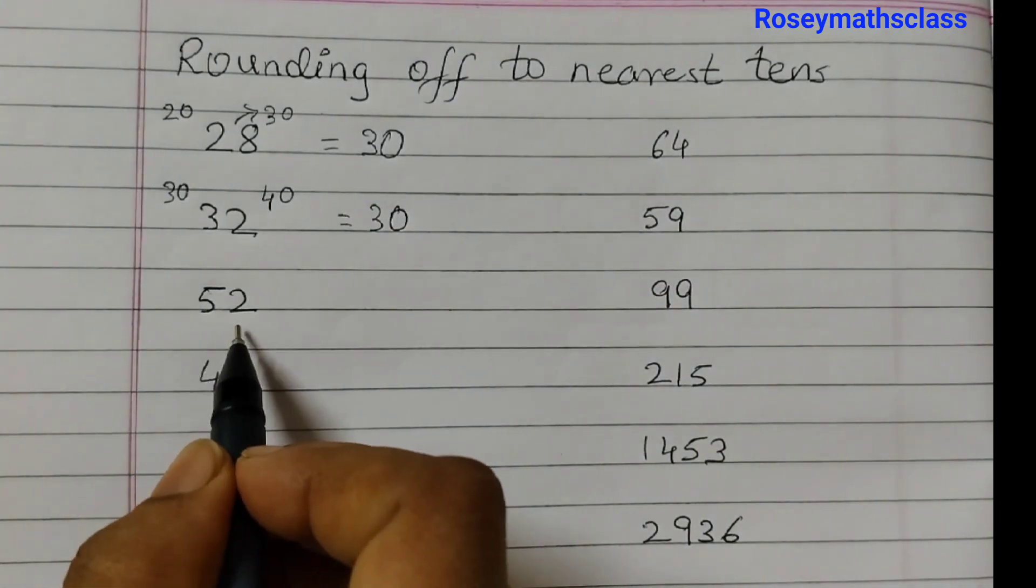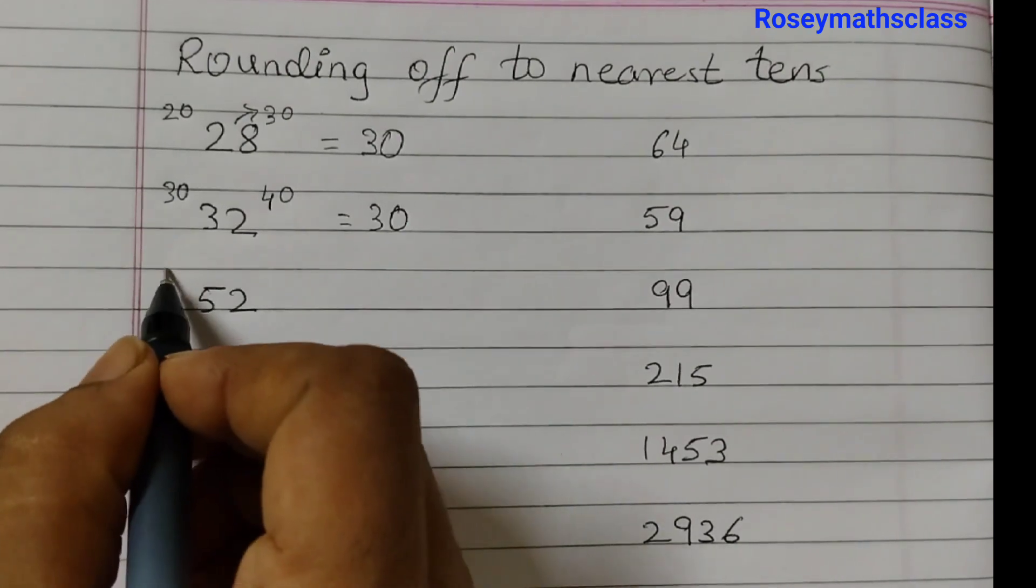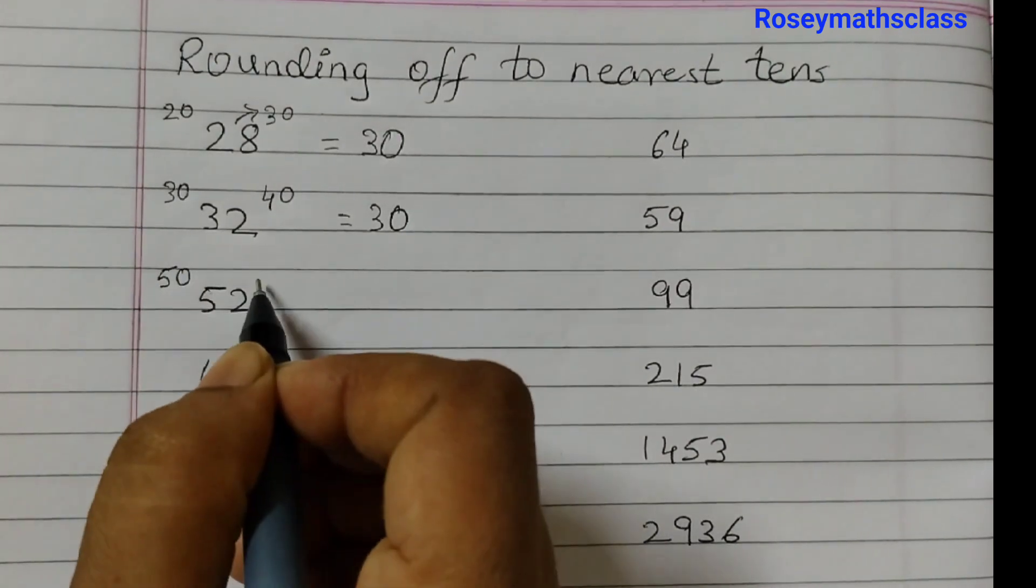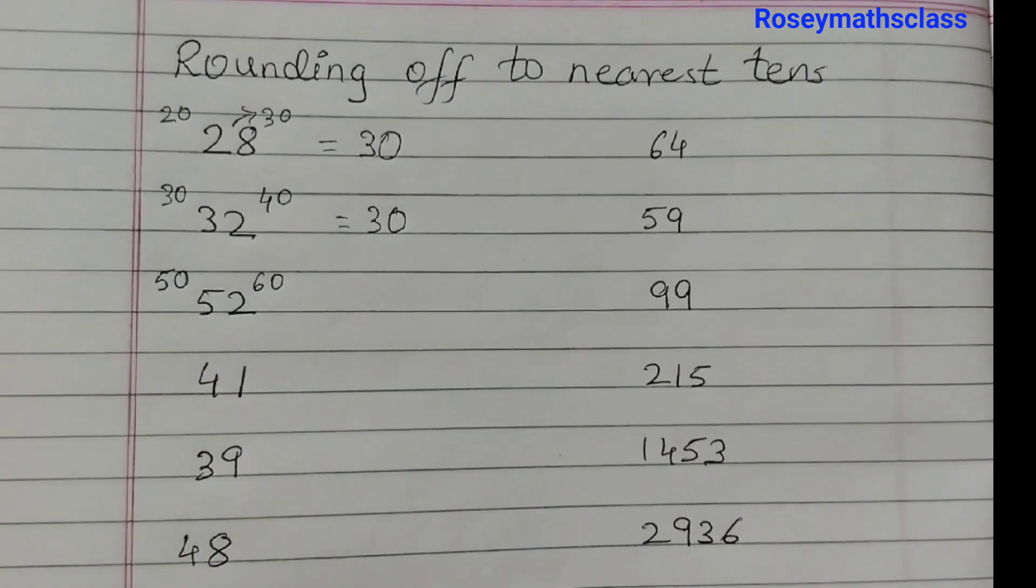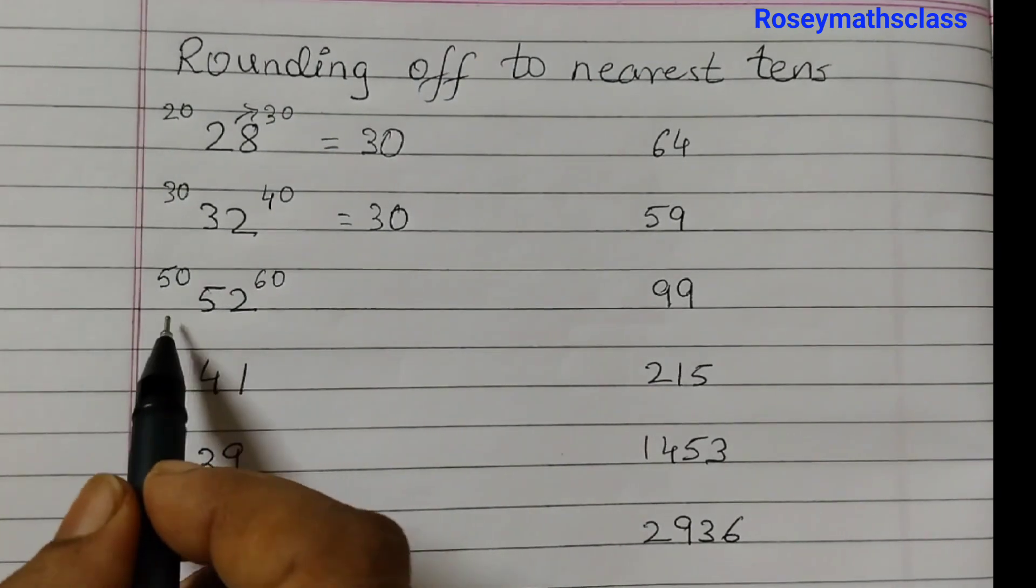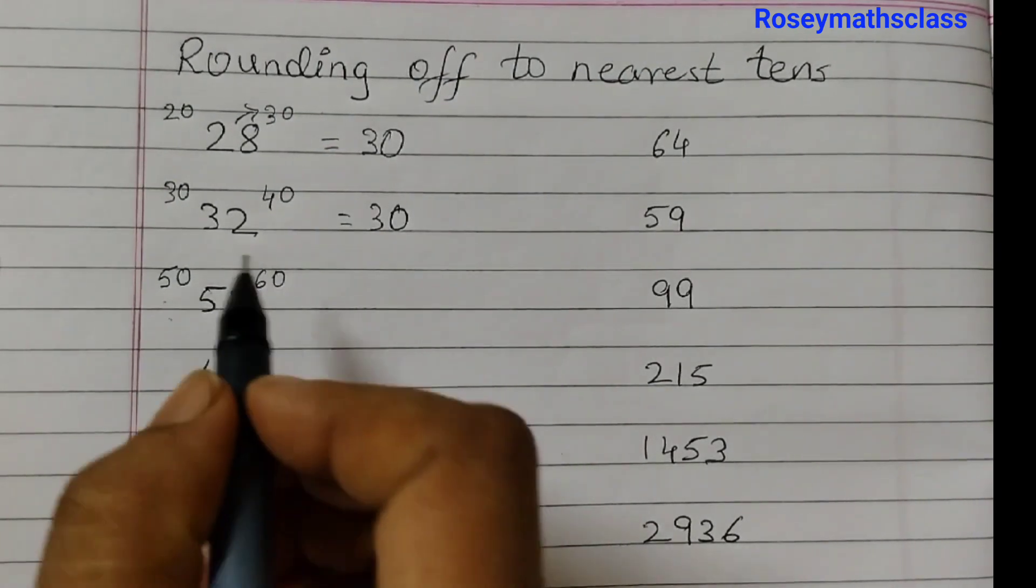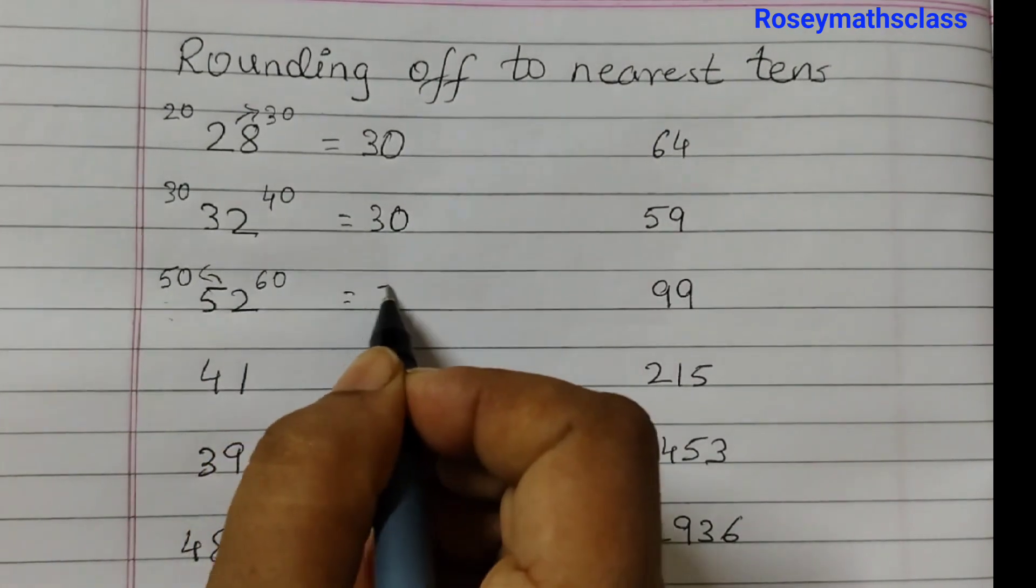52 lies between 5 tens, that is 50, and 6 tens, which is 60. 52 is closer to 50, so it would be rounded off to 50.